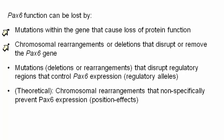Examples of this include Waardenburg syndrome and also patients that had rearrangements downstream of Pax6. There can be other types of mutations that disrupt regulatory regions that we don't know about yet. We suspect that there is at least one patient that has a rearrangement 3 prime to the gene. And theoretically, there are chromosomal rearrangements that can turn off Pax6 expression in a nonspecific way.